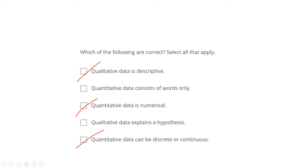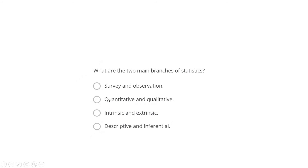Next question: What are the two main branches of statistics? The correct answer is option D: descriptive statistics and inferential statistics. Descriptive statistics is those statistics directly applied on observations - like mean, median, mode, standard deviation, variance - mostly on sample data. Inferential statistics is where we conclude or measure something from sample and try to infer for the population using hypothesis testing.